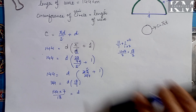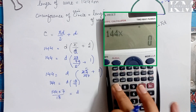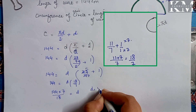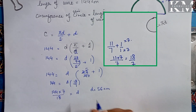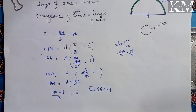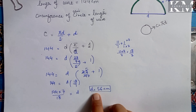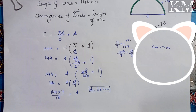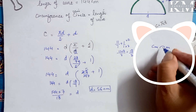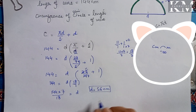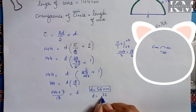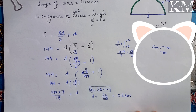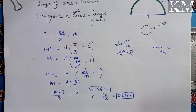So the equation becomes d × 18/7 = 144. The 7 from the left side moves to the right side and multiplies, and 18 divides. So d = 144 × 7 / 18, which gives you 56. The answer is 56 centimeters. But the question demands the answer in meters, so we convert centimeters to meters by dividing by 100. So 56 ÷ 100 = 0.56 meters.